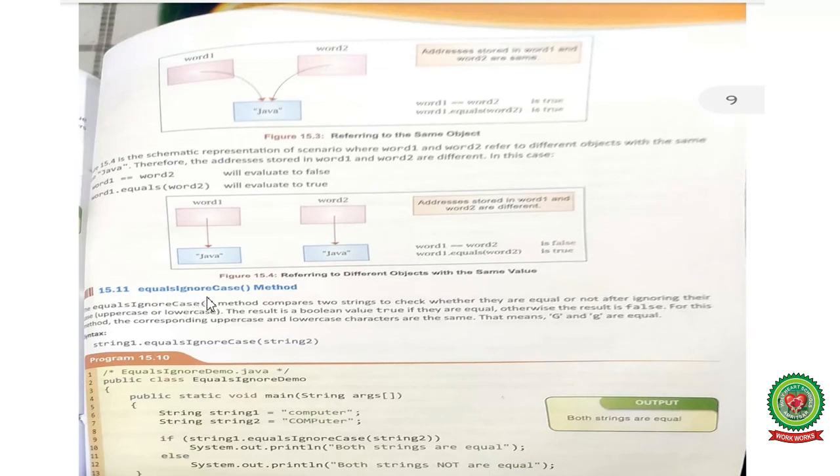The next topic is equals ignore case method. Yes, as the name suggests, ignore case. So this method compares two strings to check whether they are equal or not after ignoring their case. If I stored the word computer and computer in string one and string two, both in lowercase, string one dot equals ignore case string two will return the boolean value, true or false, according to the system dot out dot println statement.